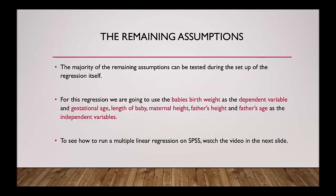The majority of the remaining assumptions can be tested during the setup of the regression itself. For this regression we are going to use the baby's birth weight as the dependent variable and gestational age, length of baby, maternal height, father's height, and father's age as the independent variables. To see how to run a multiple linear regression on SPSS, watch the video in the next slide.